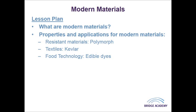Another modern material is Kevlar, which we normally associate with stab vests. It was developed in 1965. It's a lightweight fabric that is five times stronger than steel, weight for weight, and is normally woven and used in layers. It's most commonly used in bike tyres and stab vests. If you're wearing a Kevlar stab vest and you are attacked, it will absorb the impact and close in around the blade, slowing it down so it doesn't penetrate the skin. Once the Kevlar has been damaged, it becomes unusable and doesn't return to its original quality.